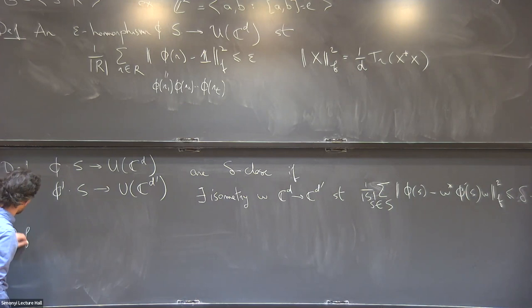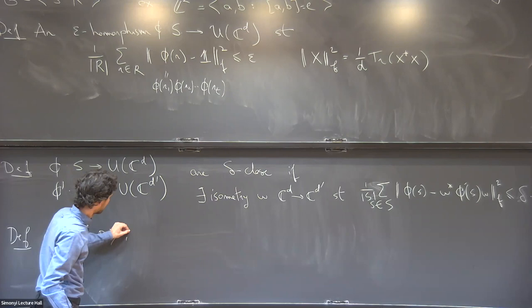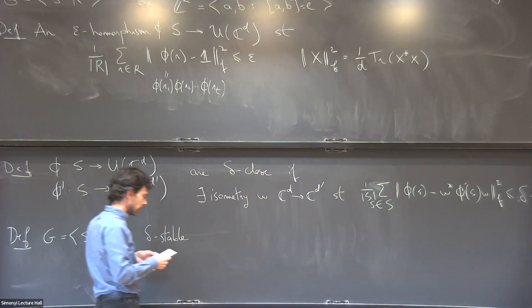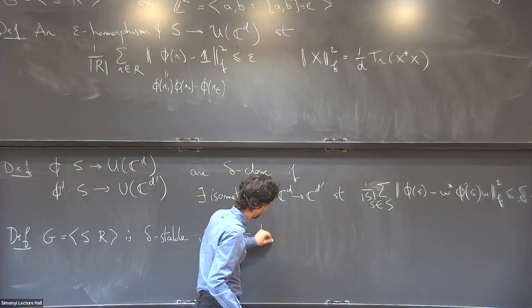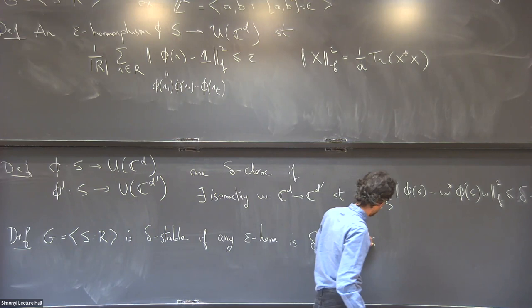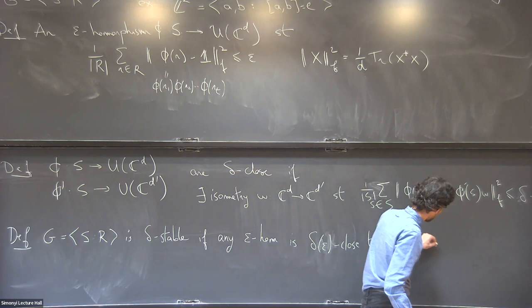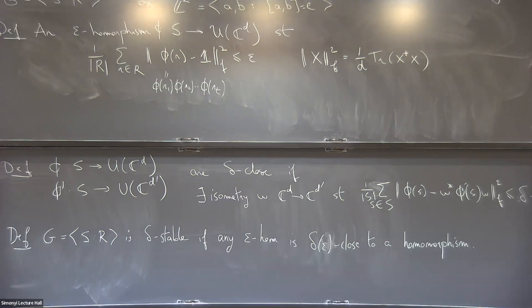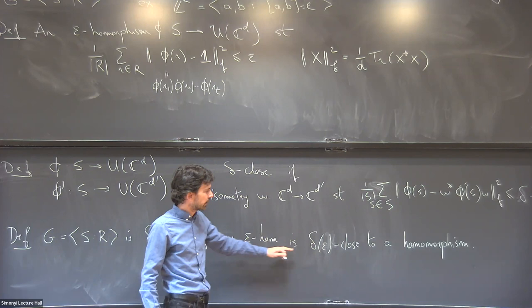Using this notion, I can define what it means for a group presentation to be stable. The group — really the presentation of the group — is stable if any epsilon-homomorphism is delta-close to an actual homomorphism, where delta is a function of epsilon. Ideally delta goes to zero as epsilon goes to zero. An epsilon-homomorphism is only defined on generators and approximately respects relations; an actual homomorphism is defined on the whole group and respects the multiplication table. I measure their closeness only on the generators.